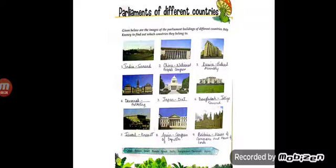You need to write down which countries these parliaments belong to. Let's start with the first one. The first one is in India, Sansad. We'll write down what that place is also known as. Second, this picture, it is China National People's Congress. Third, Russia Federal Assembly.